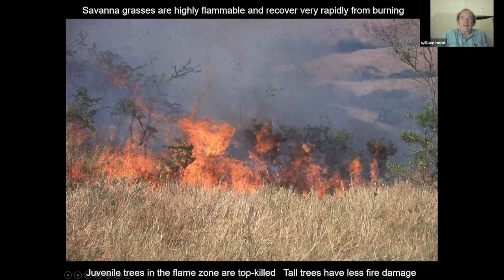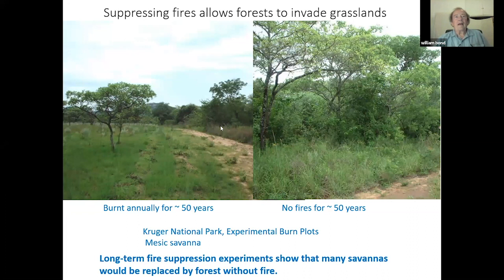We've known for a long time that fire is very influential. We've been running fire manipulation experiments for a century; this one in Kruger has been going on for more than half a century. Here you see the results of burning every year for over 50 years: just across the road it looks like this — the savannah is turning into a forest. The climate here is suitable for forest; the reason it isn't forest across the wetter northern parts of Kruger is because of frequent fire.